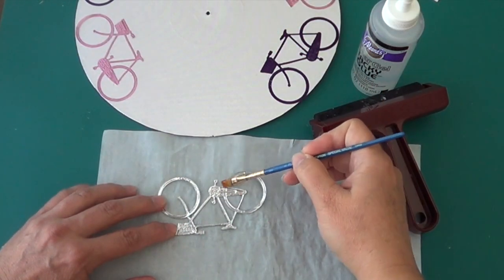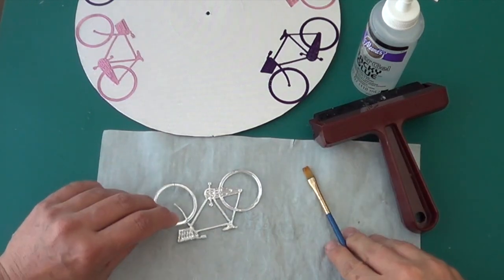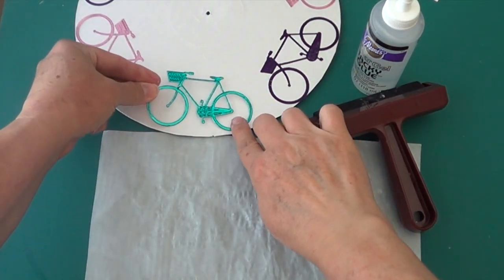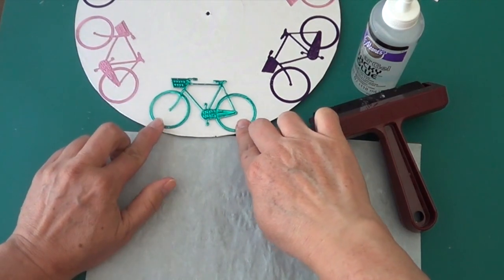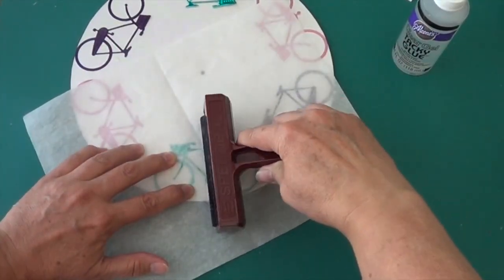Then you're going to cover the back of each bike with a thin coat of glue and press it into place with all the wheels an even distance apart. Use that parchment sheet with the brayer again to make sure all those little pieces are smooth against the clock face.